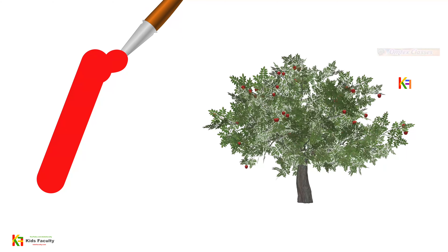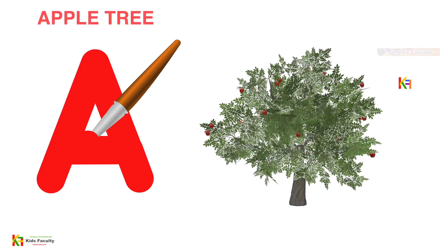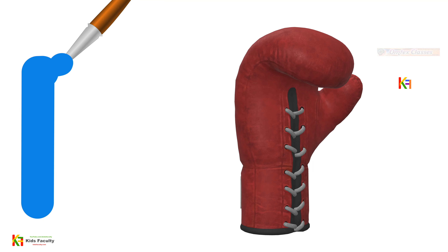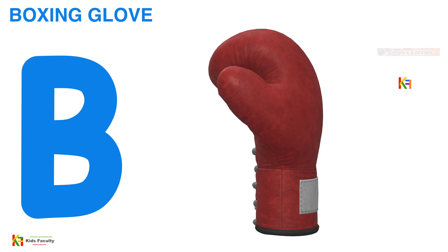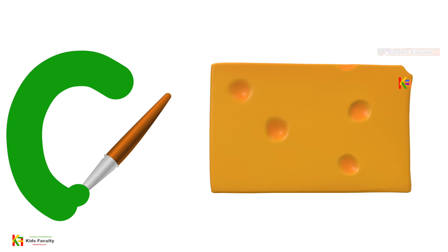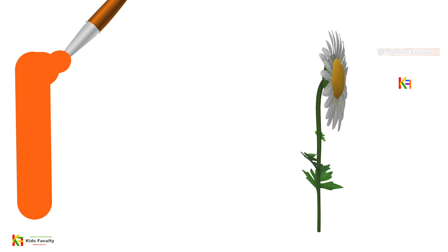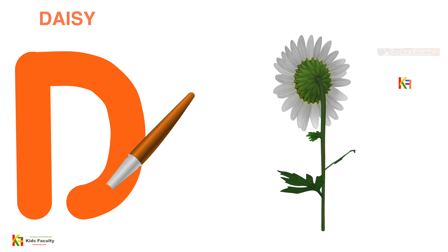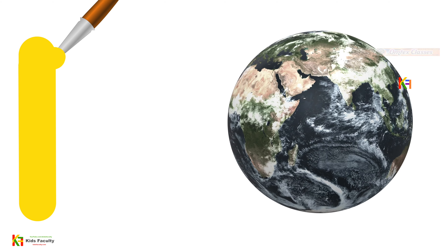A for apple tree, B for boxing globe, C for cheese, D for daisy, E for earth.